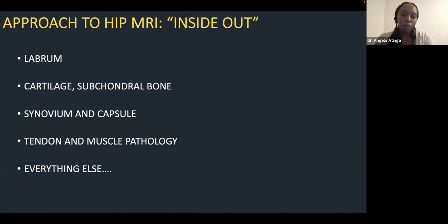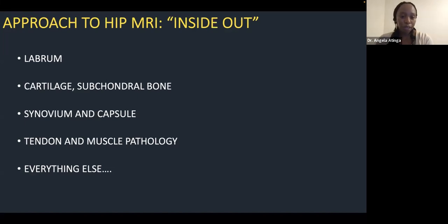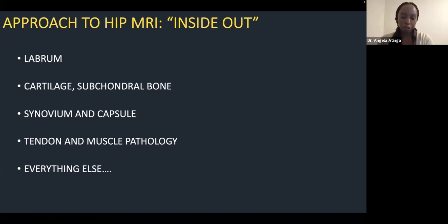My approach to hip MRIs uses an inside-out method. I start with the labrum, then look at the cartilage and subchondral bone, then the synovium and capsule of the hip, then the tendons and muscles around the hip. Finally I go back to review the large field-of-view images — making sure I've looked at the whole pelvis, bones, muscles, SI joints, and anything else in the field of view. Always remember to look at your scout images as well.